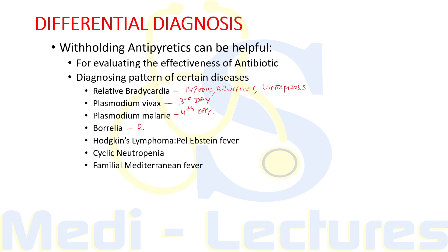Similarly, there is a fever peak every fourth day in Plasmodium malariae. Borrelia is characteristic of relapsing fever — the fever subsides completely then relapses. Hodgkin's lymphoma has the characteristic Pel-Ebstein fever, characterized by a 3–10 day febrile phase followed by a 3–10 day afebrile phase in a cyclical pattern. Cyclical neutropenia is characterized by fever every 21 days with accompanying neutropenia. In familial Mediterranean fever, there is no periodicity.